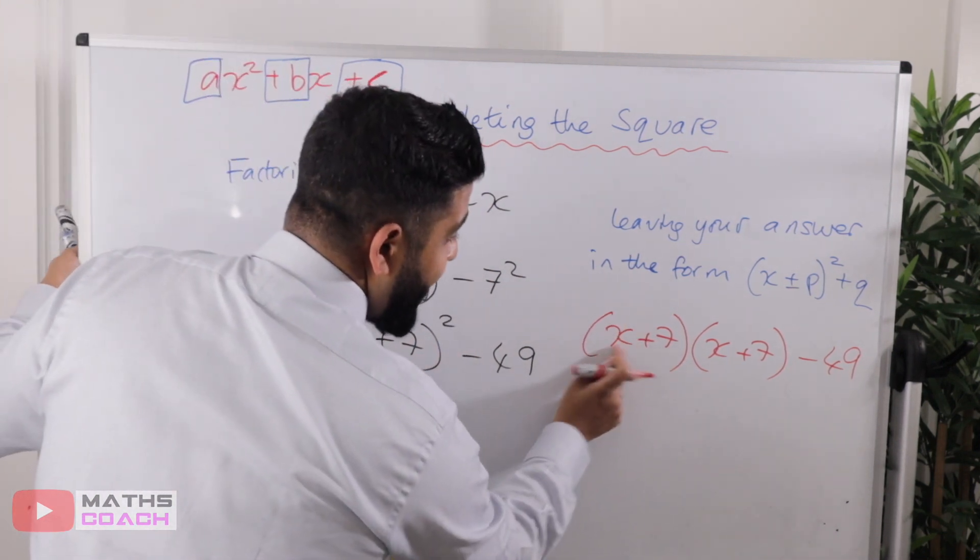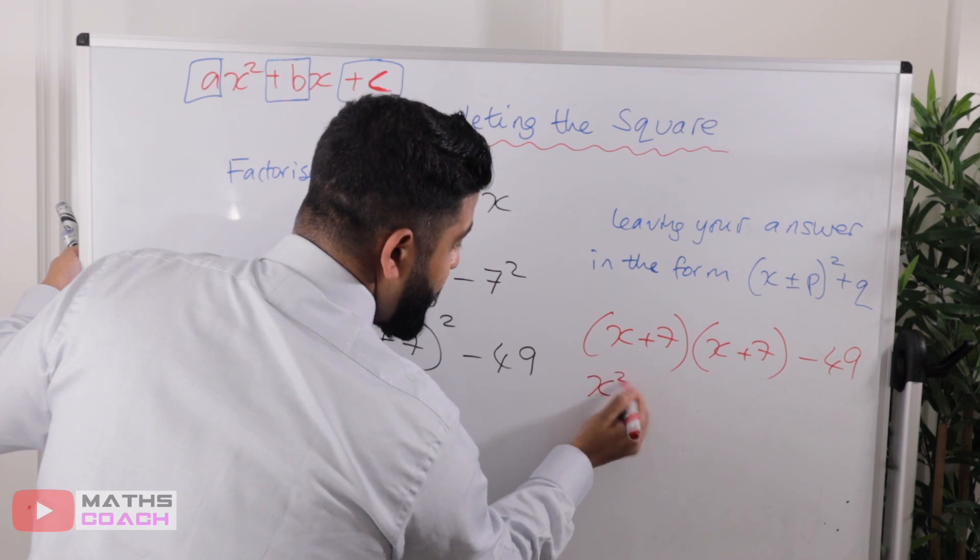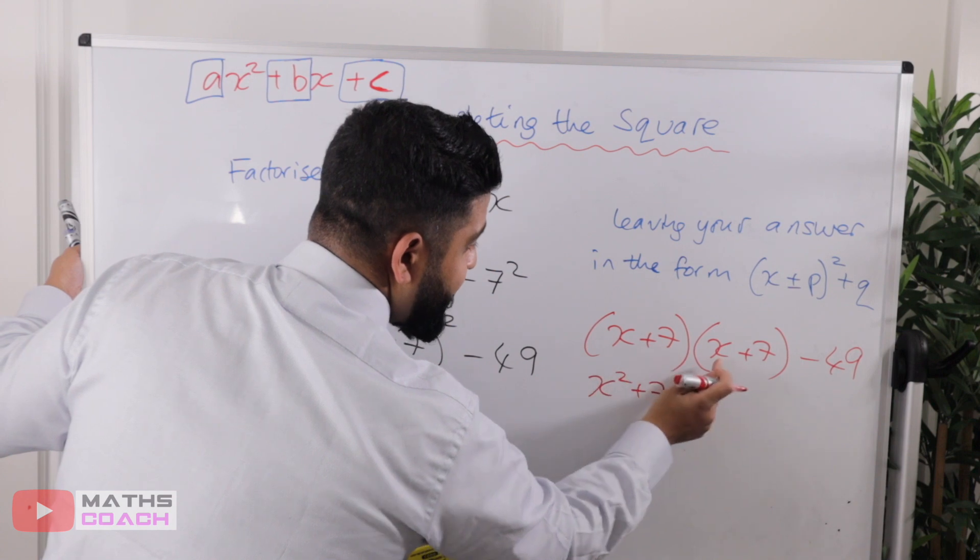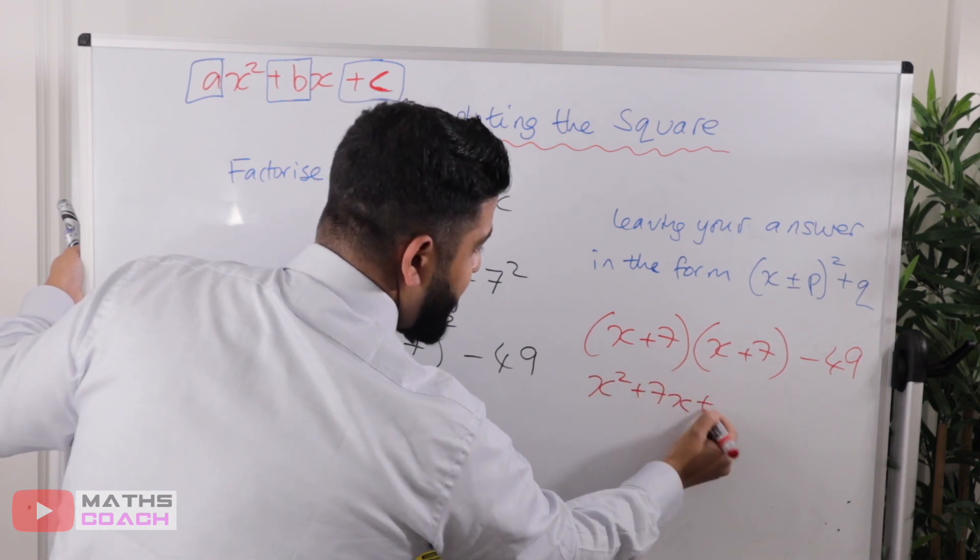And then we have the minus forty-nine on the outside. I'm just doing this step here. You don't need to do this. Just to show you that our answer is actually correct. So what do we do here? We do x times by x, which is x².